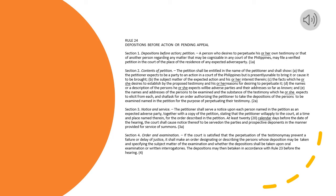Section 2. Contents of Petition. The petition shall be entitled in the name of the petitioner and shall show: (a) that the petitioner expects to be a party to an action in a court of the Philippines but is presently unable to bring it or cause it to be brought; (b) the subject matter of the expected action and his or her interest therein; (c) the facts which he or she desires to establish by the proposed testimony and his or her reasons for desiring to perpetuate it; (d) the names or a description of the persons he or she expects will be adverse parties and their addresses so far as known; and (e) the names and addresses of the persons to be examined and the substance of the testimony which he or she expects to elicit from each, and shall ask for an order authorizing the petitioner to take the depositions of the persons to be examined named in the petition for the purpose of perpetuating their testimony.